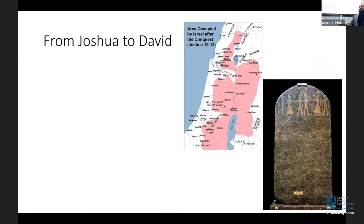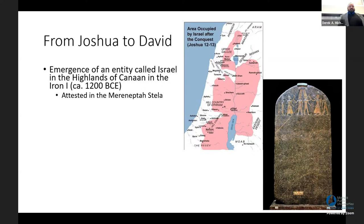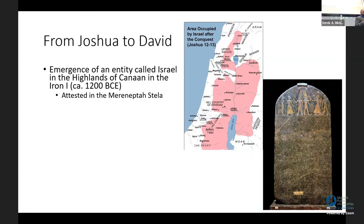What can we say about this period? We want to take us from where we were into where we are now. After the last meeting, we had been looking at the biblical account of Joshua and the conquest, asking where the Israelites came from. The conclusion we came to is that by around 1200 BC — as attested in the Merneptah Stele — there was an entity in the land of Canaan called Israel, living primarily in the highlands.